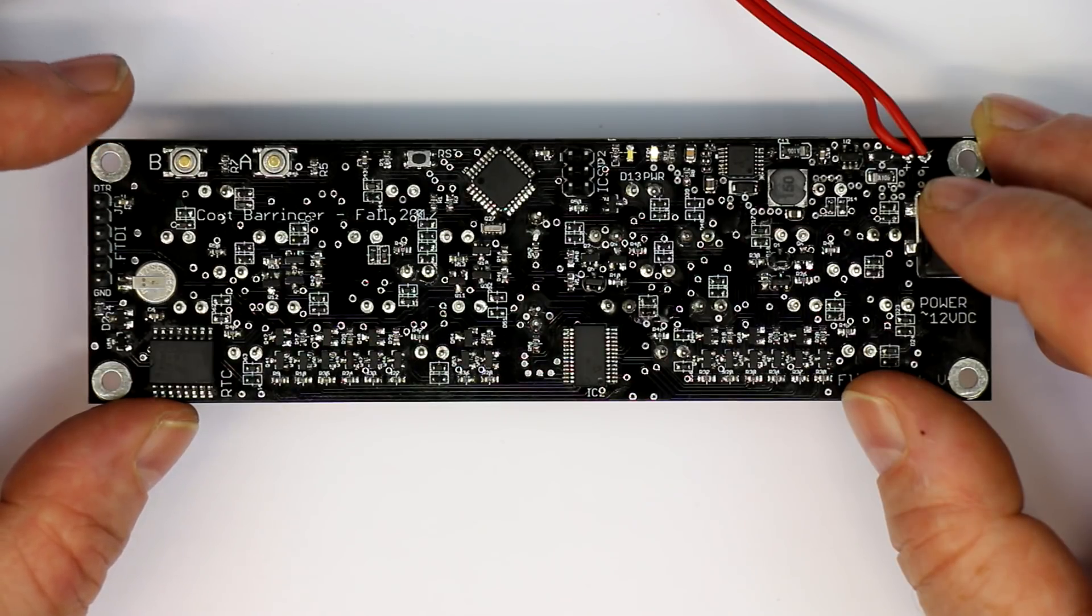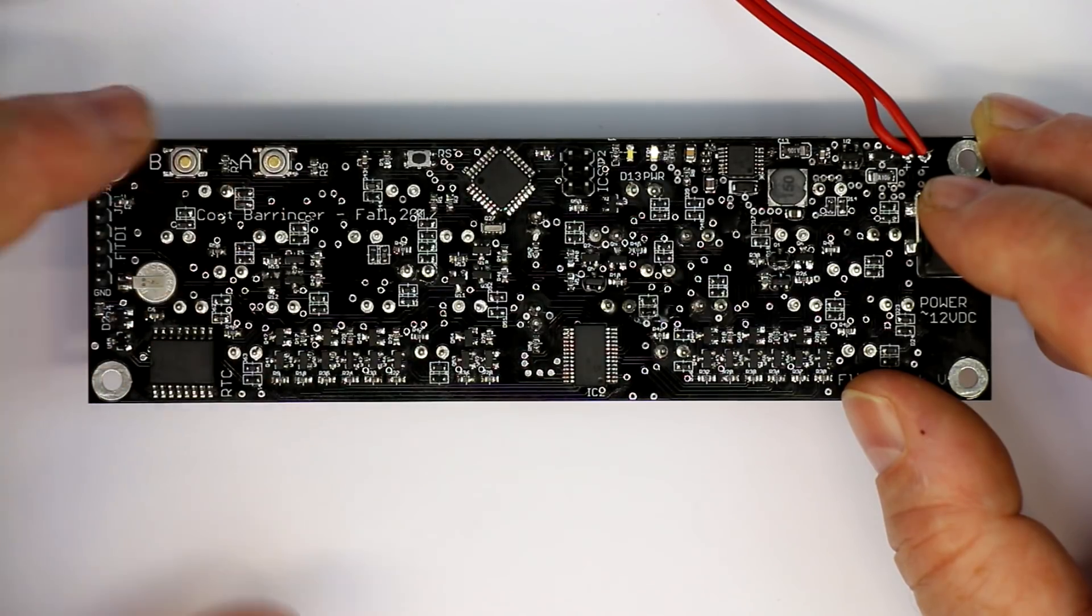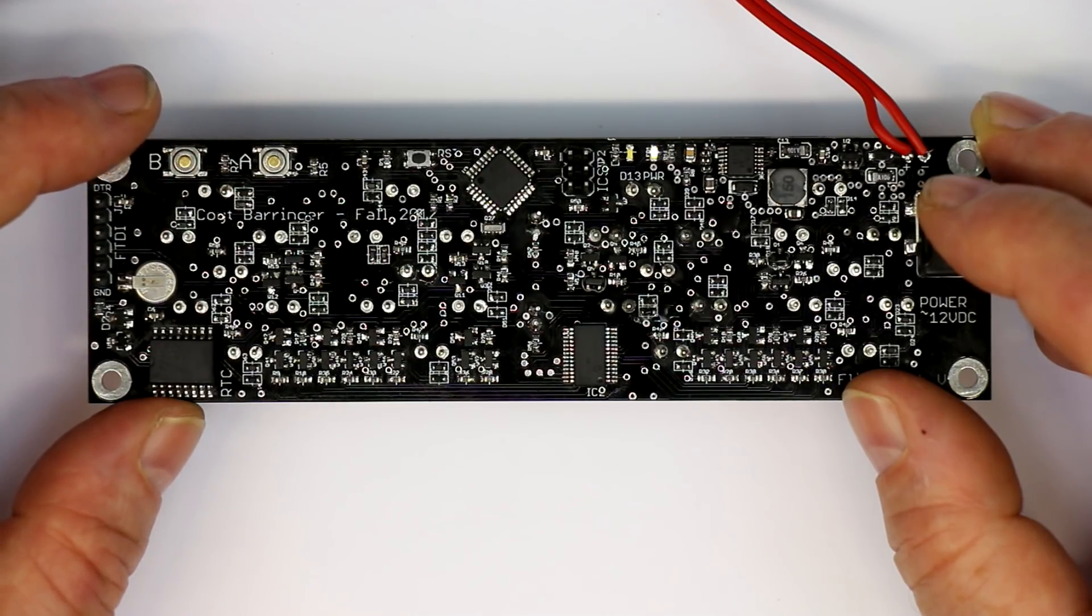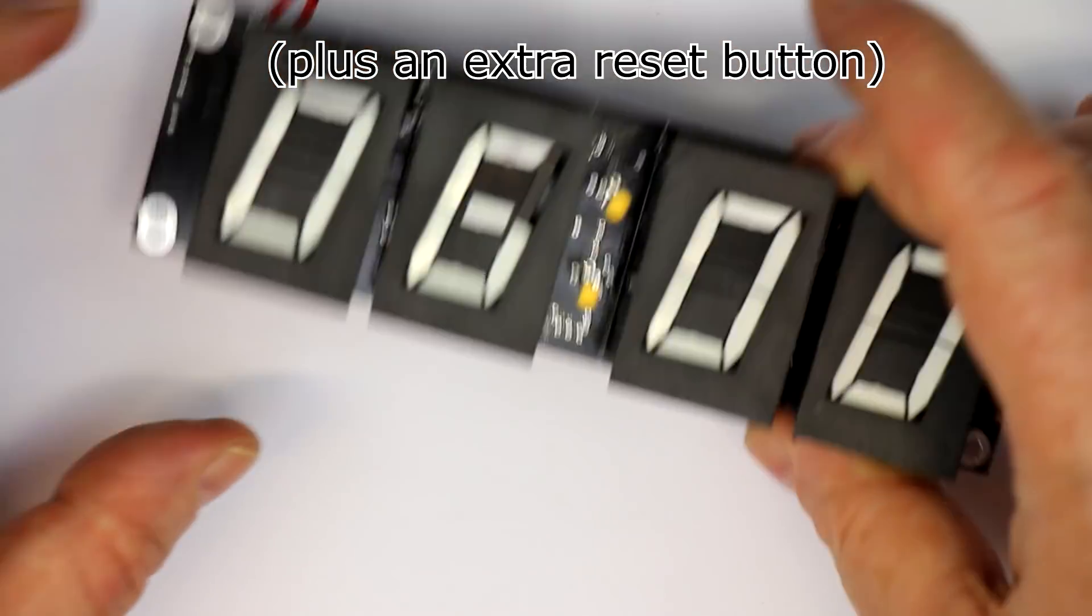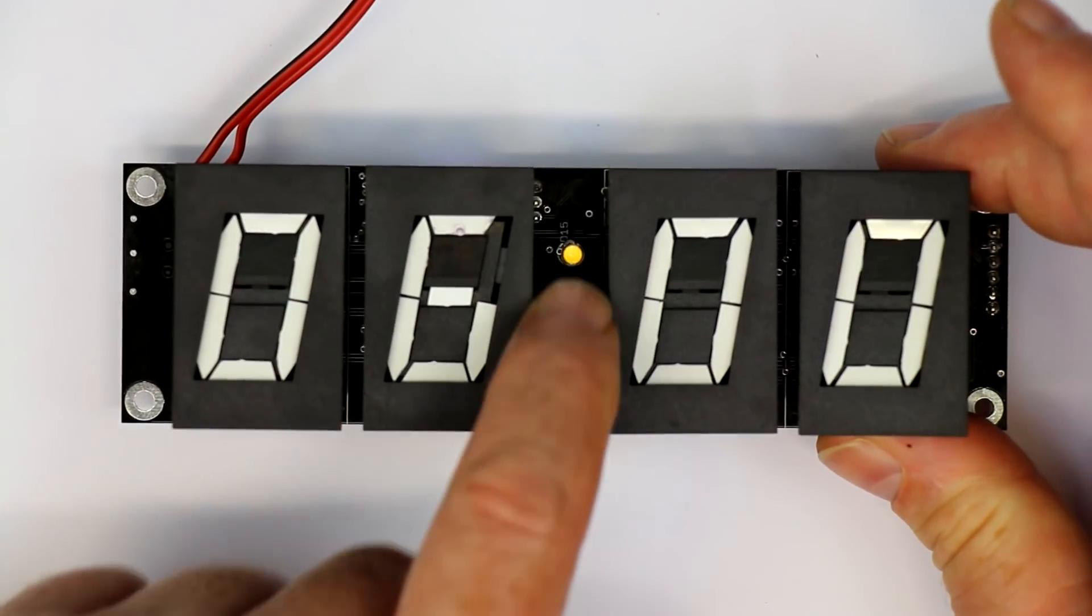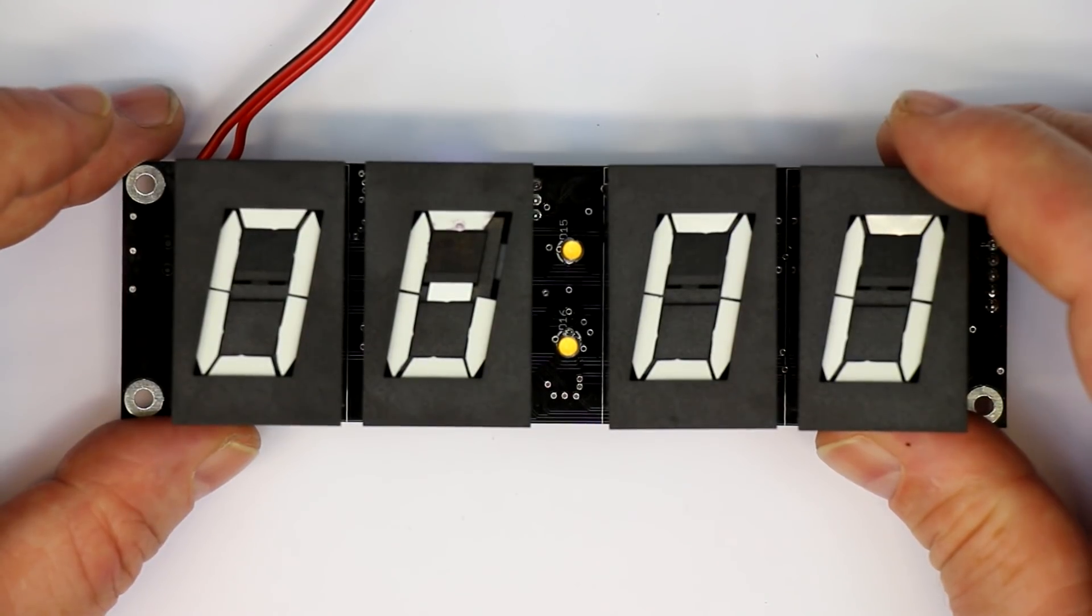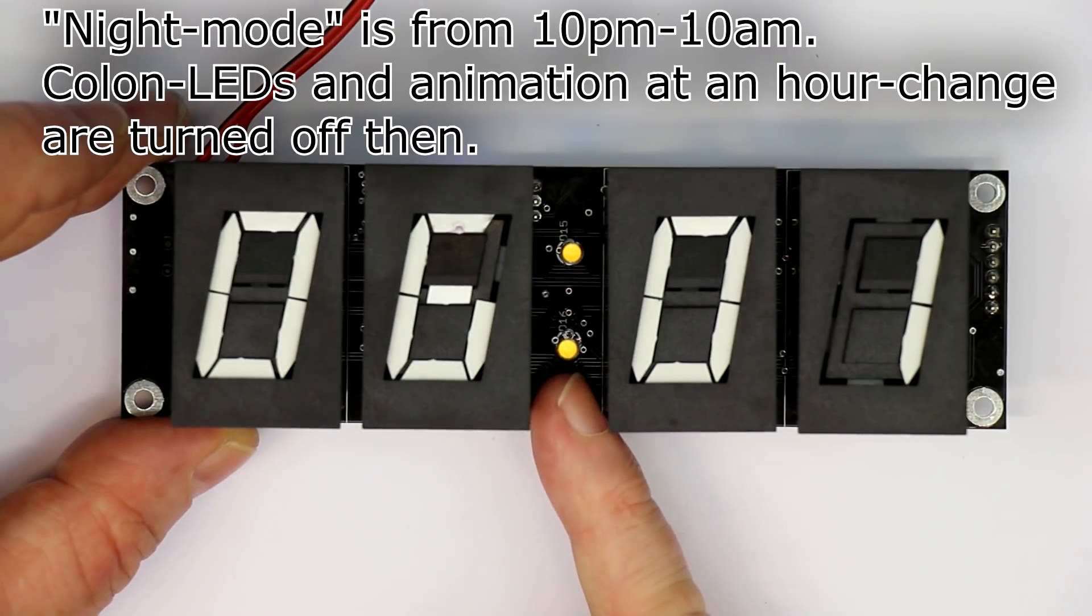I think Kroit didn't put any kind of manual online. There are only two push buttons here, A and B, for setting the hours and the minutes. I'm not quite sure if the two LEDs here in the middle, they are only blinking at some hours. I think he has put a kind of night mode into the software.